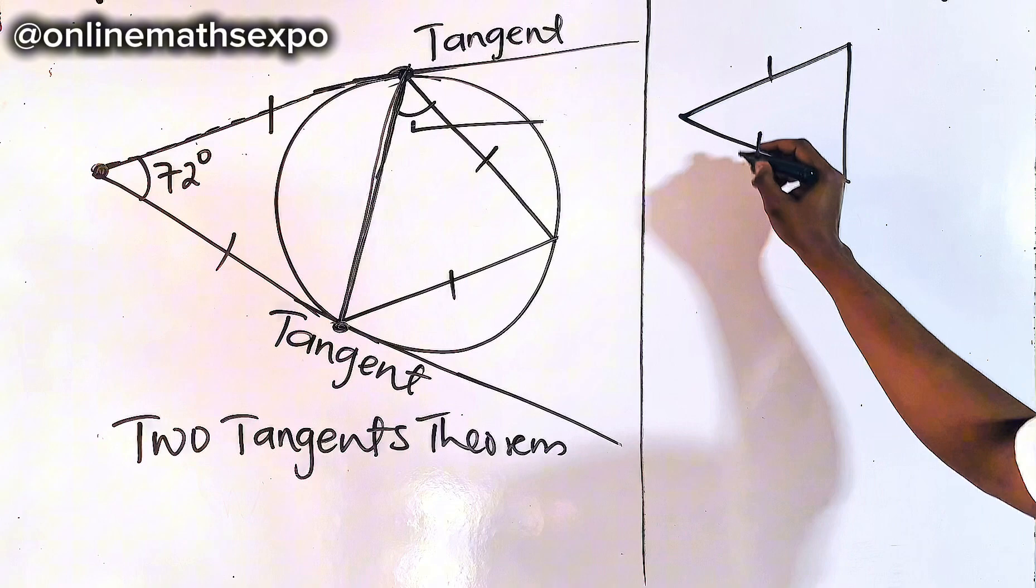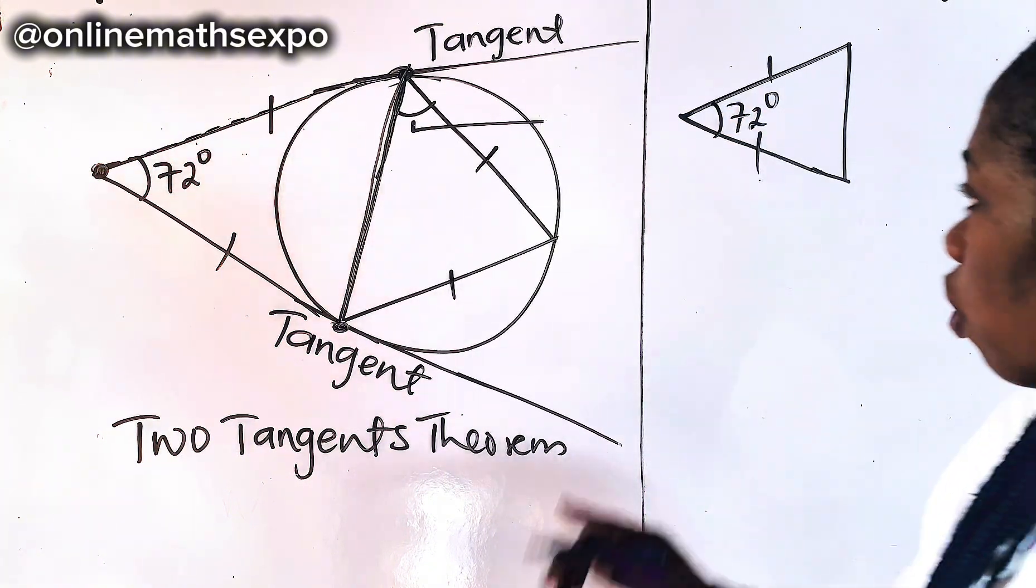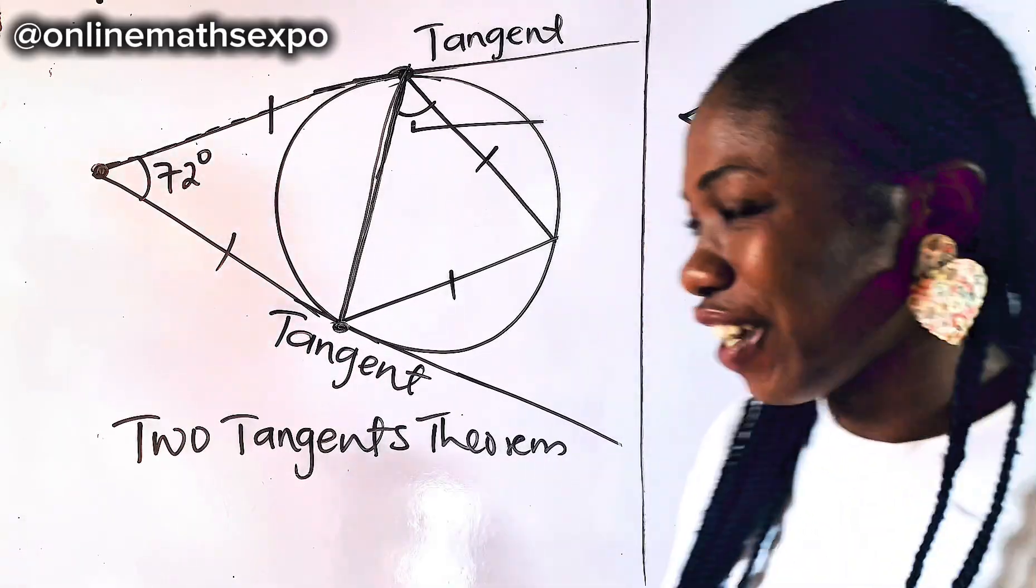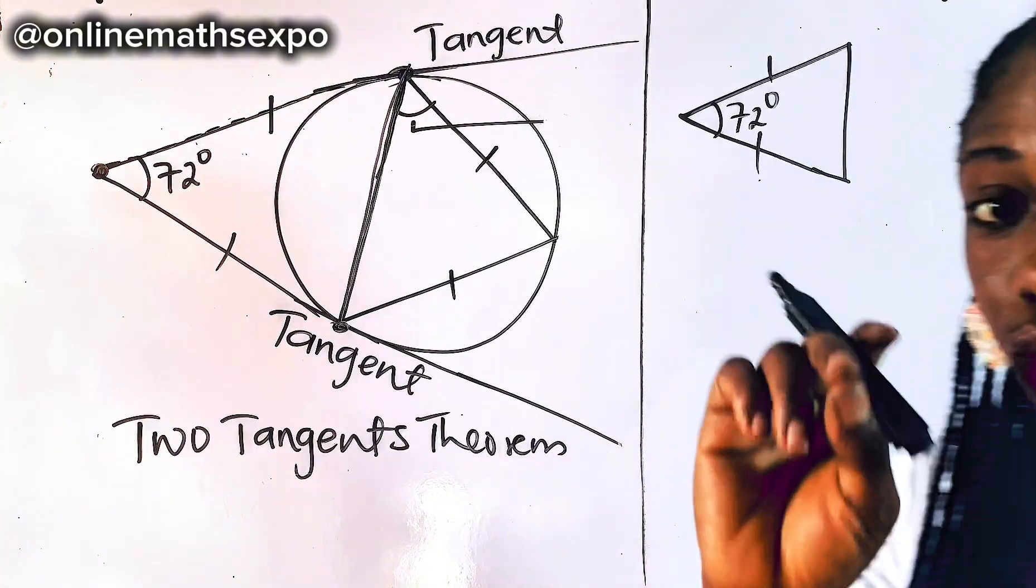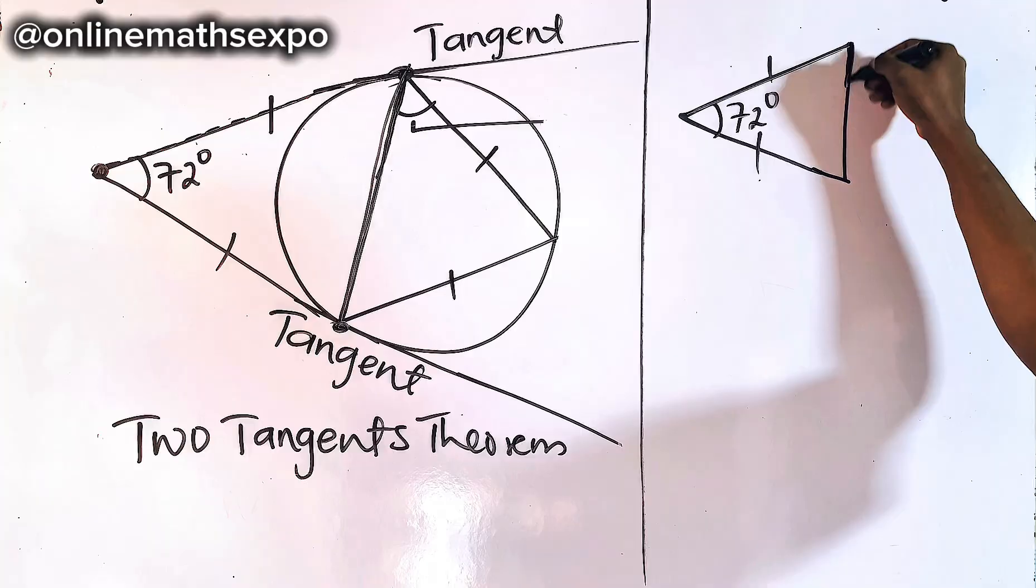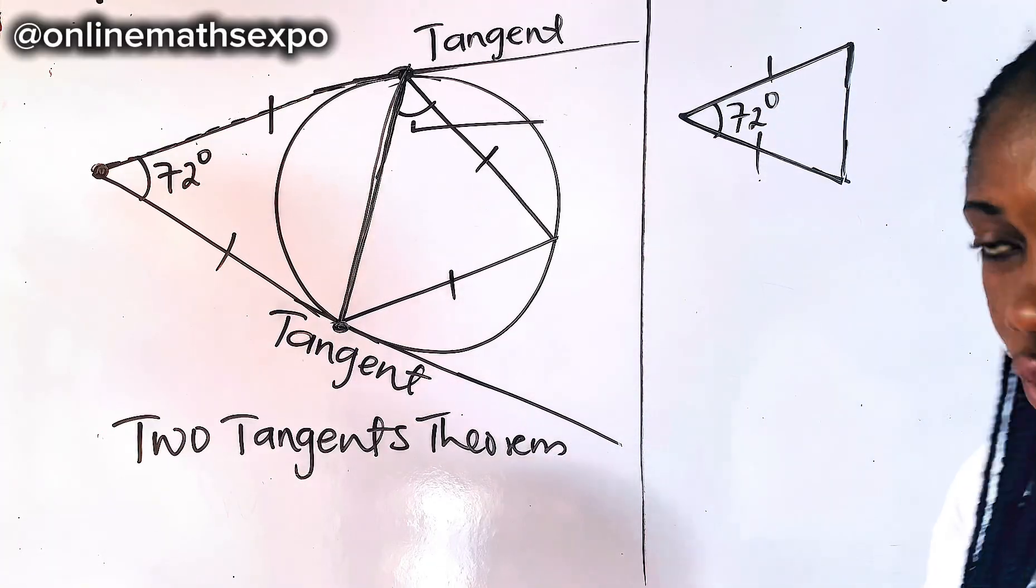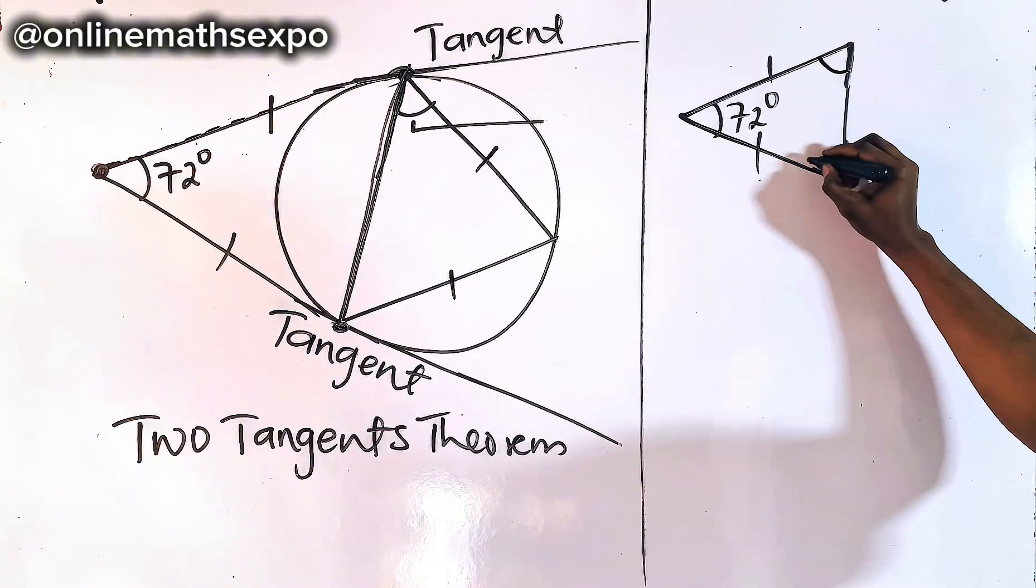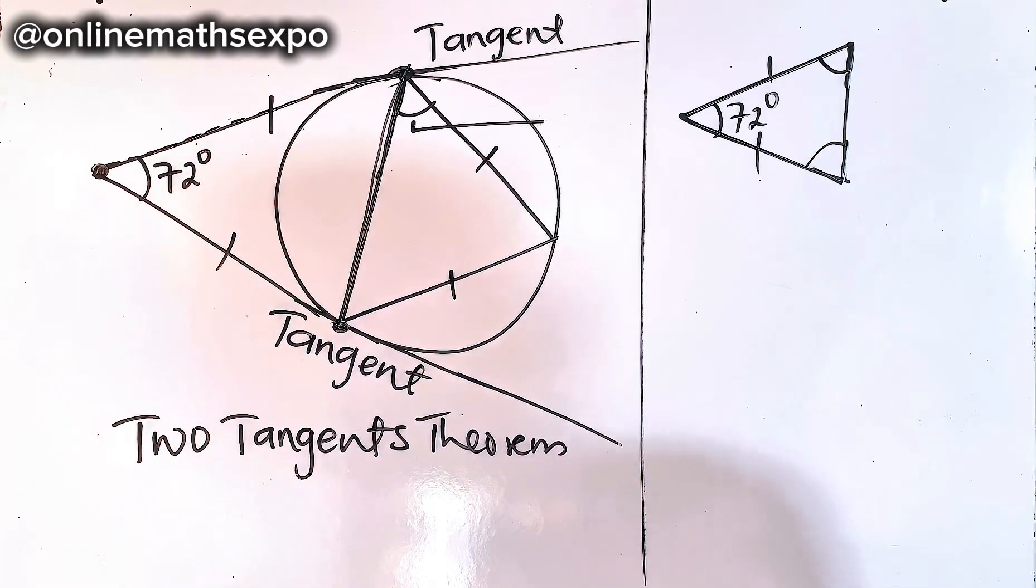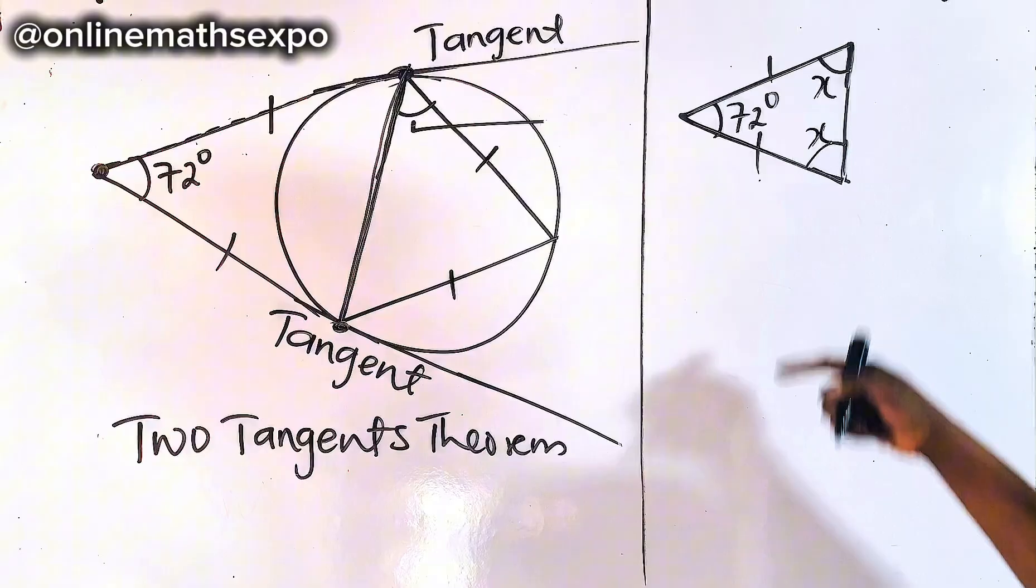If you bring that shape out, this is how it looks like. These two are the same and the angle from here is 72 degrees. When you look at this, it reminds you of an isosceles triangle. And whenever you have an isosceles triangle, the sides that are equal always form angles at the base, and these angles at the base are equal. So this angle here must be the same as this one here. So if here becomes x, here can also be x.